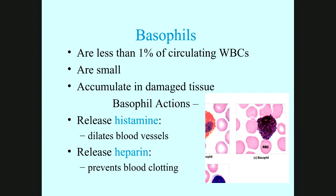Basophils represent about one percent of circulating white cells. They are small compared to the other white cells. They release histamine and heparin, which prevent blood clotting, and they also have granulated cytoplasm.